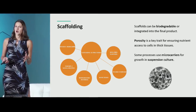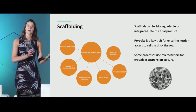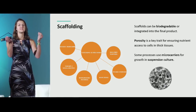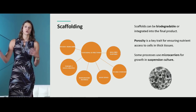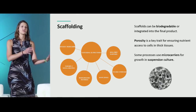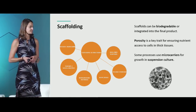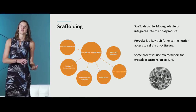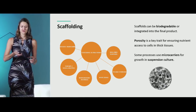Another term you might hear is micro-carriers — arguably a subset of scaffolding. These are essentially small beads that cells can adhere onto, which can be used even in the proliferation phase of the process. Some cells prefer to adhere to surfaces rather than free-float in suspension. There are similarities between the materials used for micro-carriers and those used in an actual thick tissue scaffold.